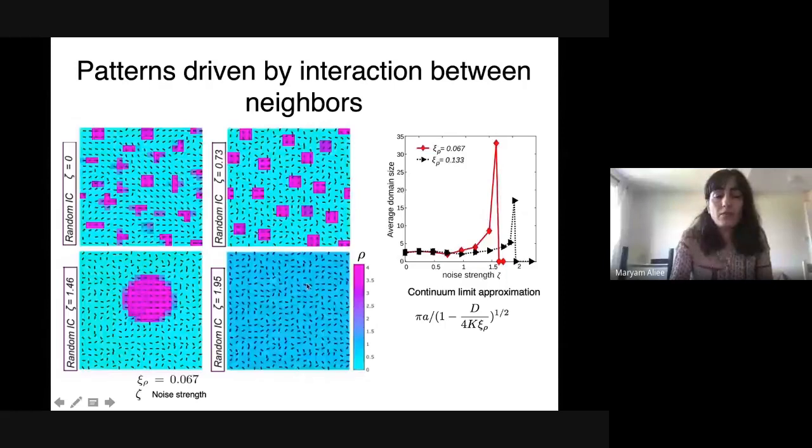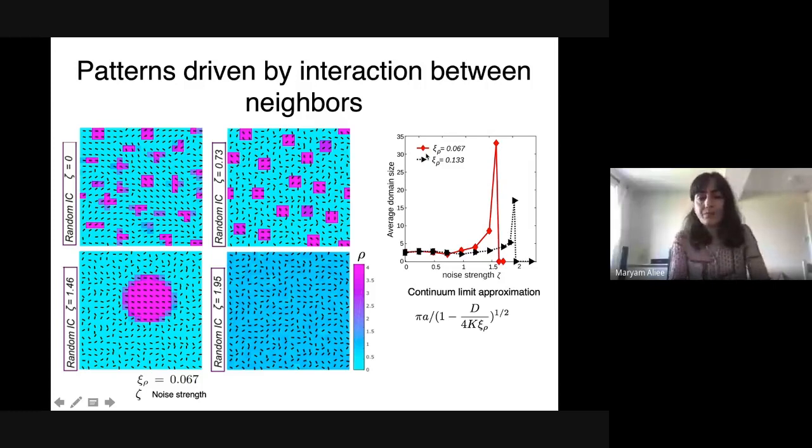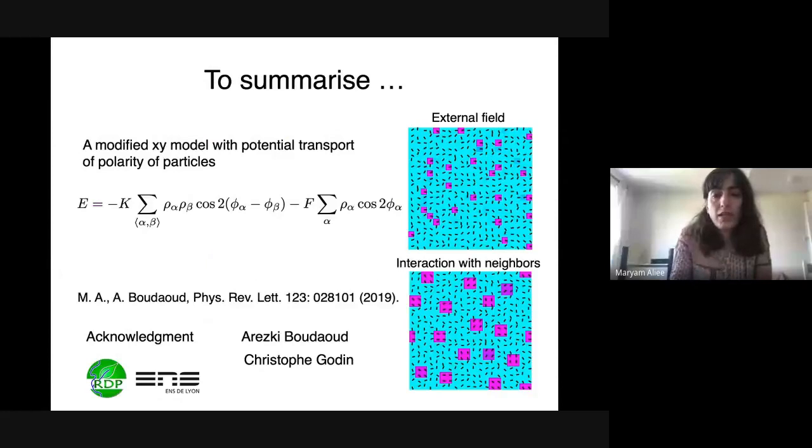You can look at the average domain size as a function of noise or temperature. For different constants of transport, it's almost constant at the beginning but near the transition point it increases and then vanishes.